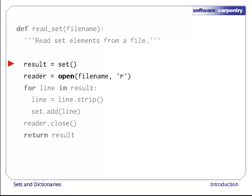We start by creating an empty set, which we will then fill up with bird names, and open the input file. We then read lines from the input one at a time, stripping off white space, and put the strings left over in the set. When we're done, we return the set we just created.